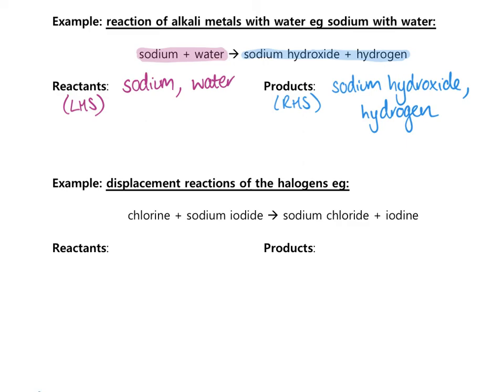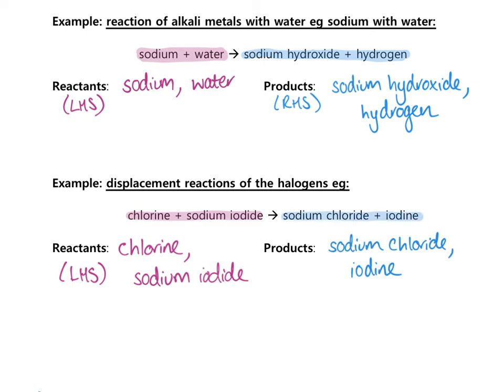Pause the video and identify the reactants and products for the reaction between chlorine and sodium iodide. The reactants are chlorine and sodium iodide — on the left-hand side. The products are sodium chloride and iodine — on the right-hand side.